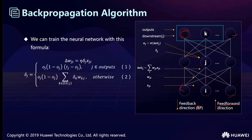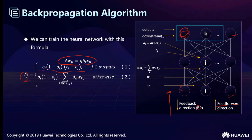First, when we input our data we calculate the results and get the output. Then we calculate the loss (epsilon) and use the epsilon to update the weights. If the output is not satisfactory, we calculate the gradient epsilon and iterate.